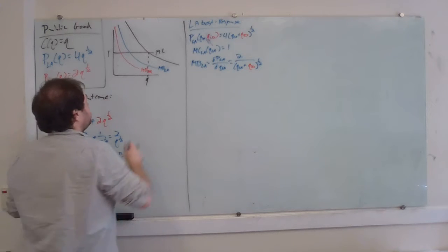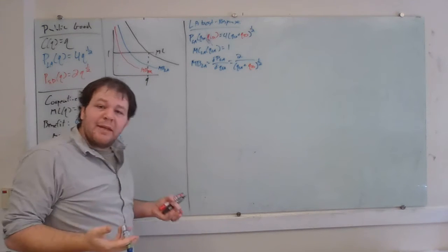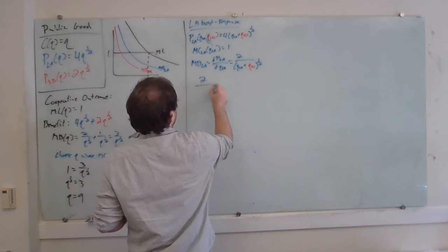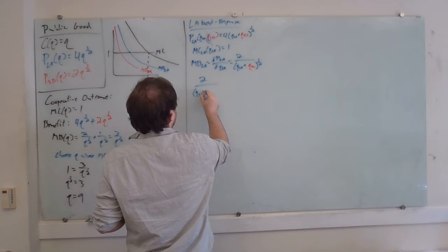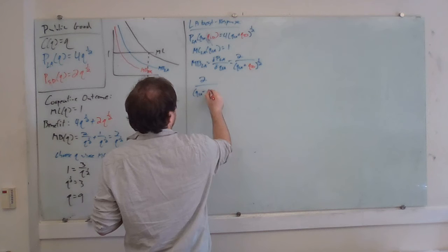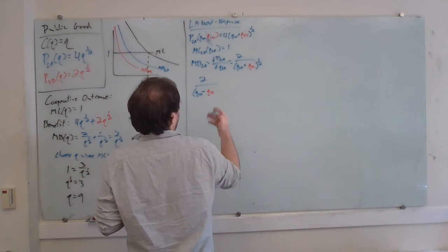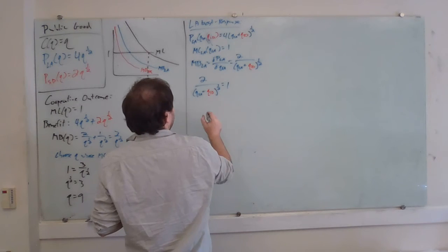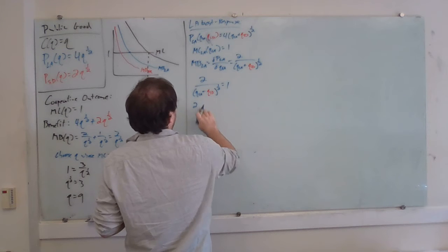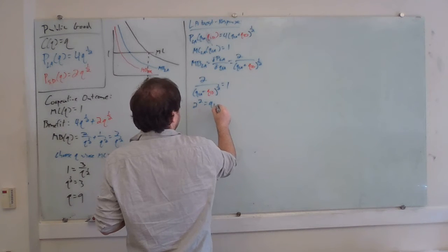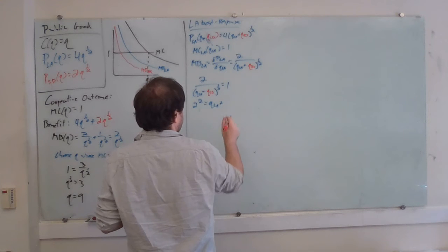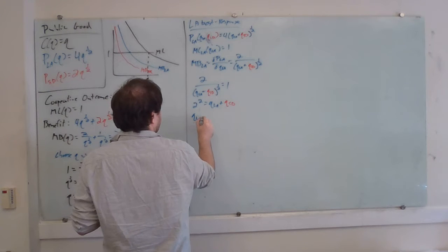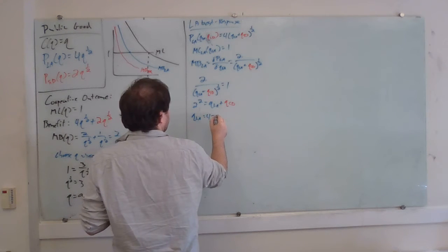They're going to produce where their marginal cost equals their marginal benefit, conditional on however much San Diego has already built. So 2 over (Q_LA + Q_SD) to the 1/2 equals 1. Squaring both sides: 4 equals Q_LA + Q_SD, so Q_LA equals 4 minus Q_SD.